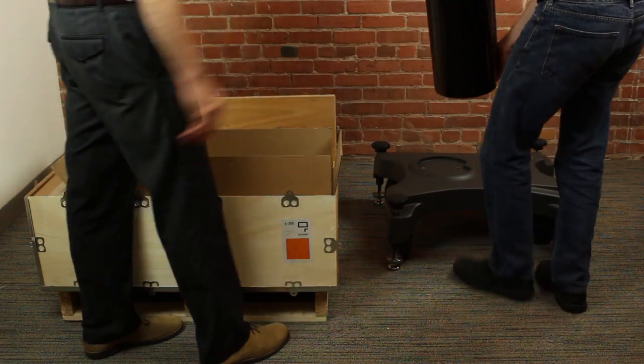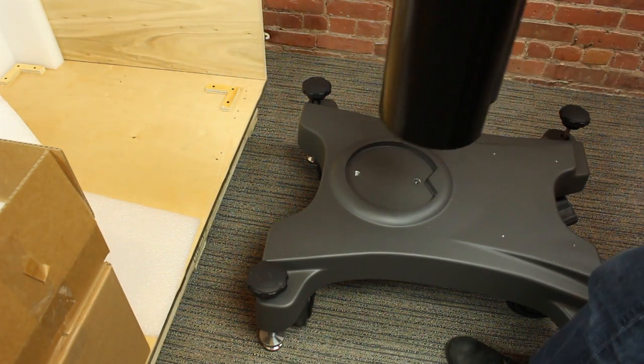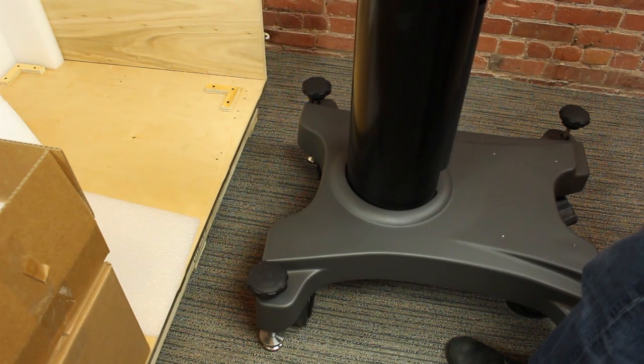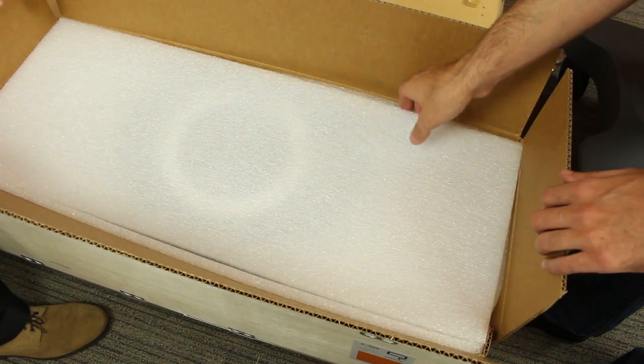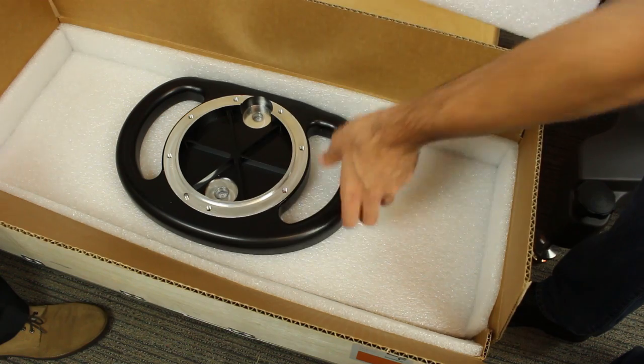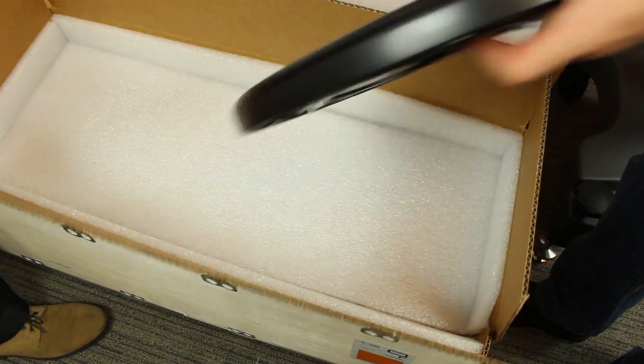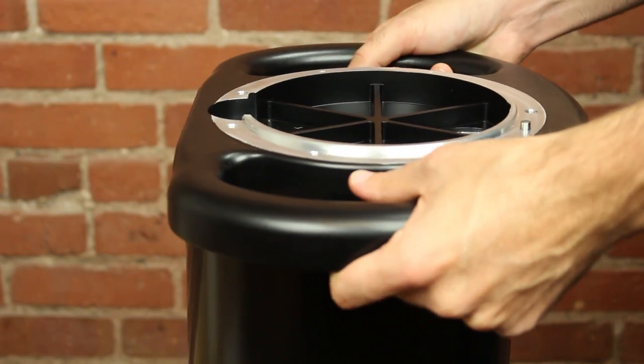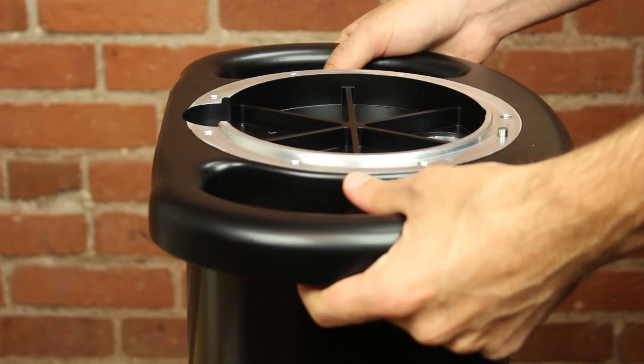Next, position the column on the base. It is keyed to only fit in one orientation. Now place the handlebars on top of the column. The handlebars are designed to fit with the flat side facing the front, opposite the channel in the column.